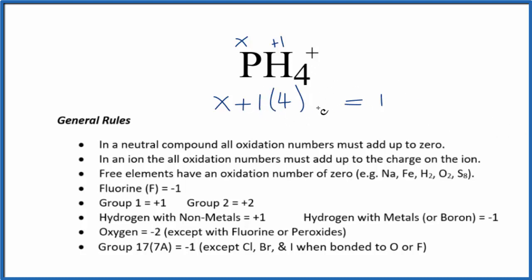1. We'll add negative 4 to each side to cancel this 4 out. X will equal -3, so the oxidation number on the phosphorus in PH4+ is -3. We add